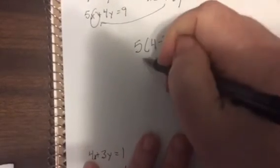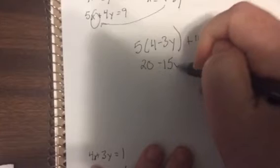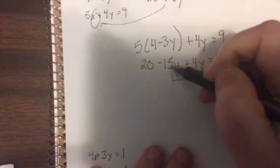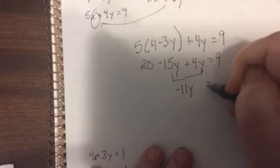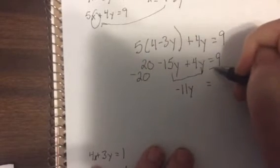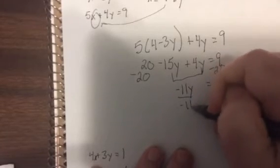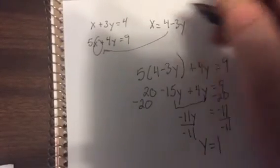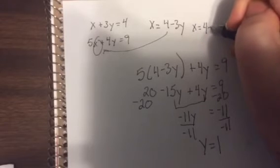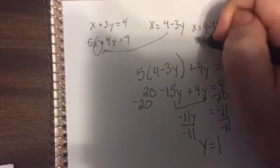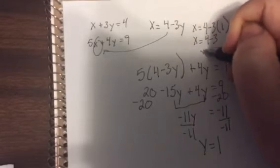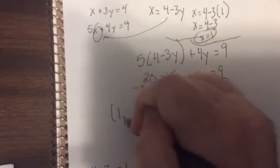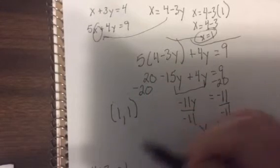20 minus 15y plus 4y equals 9. So I'm going to combine the y's. Minus 15 plus 4 is minus 11y. So I'm going to combine the y and subtract 20. So divide by negative 11. Y equals 1. So now I'm going to put that back up here. So x equals 4 minus 3 times the 1. Y is 1. So x equals 4 minus 3. So x equals 1. Got a little sloppy there. So my answer is 1-1. The sleeping owl. Doesn't that look like an owl that's sleeping? I don't know.